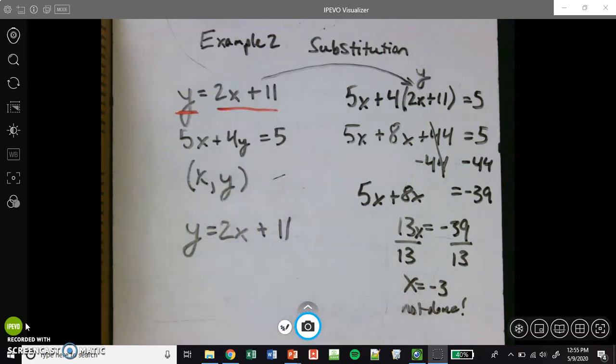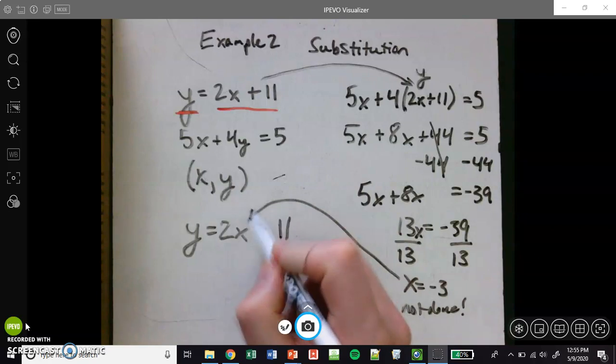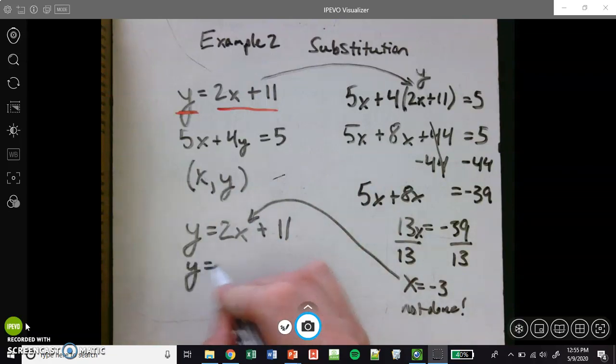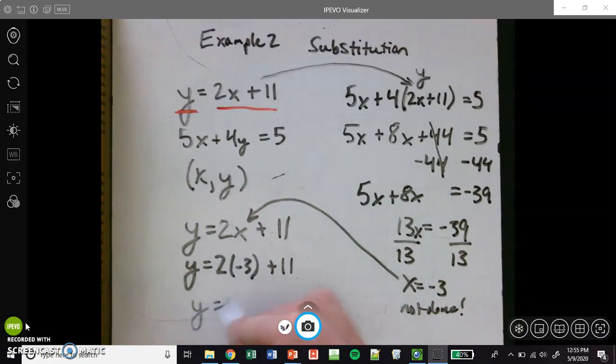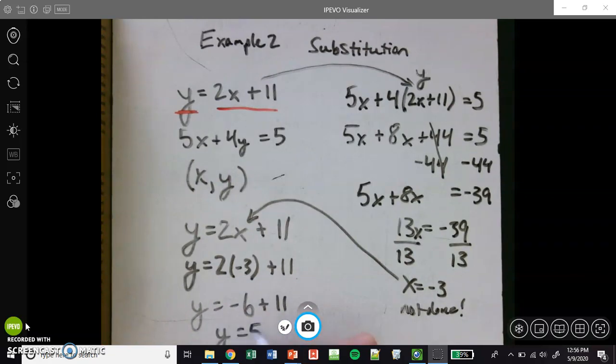So it's 2x plus 11. So what I'll do is I'll take x equals negative 3 and plug it in. So y equals 2 times negative 3 plus 11. And so what I get here is y equals 2 times negative 3, that's negative 6, plus 11. I get y equals 5.